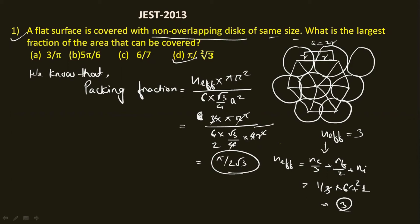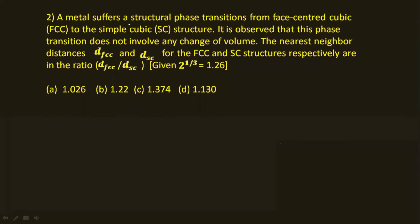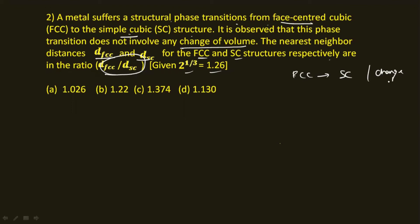Question number two: a material undergoes a structural phase transition from face-centered cubic (FCC) to simple cubic (SC) structure. It is observed that this phase transition does not involve any change of volume. The nearest neighbor distances are d_FCC and d_SC for the FCC and SC structures respectively — you are asked to find their ratio. In simple cubic, drawing a cube of side a, the coordination number is 6 and the nearest neighbor distance is a.